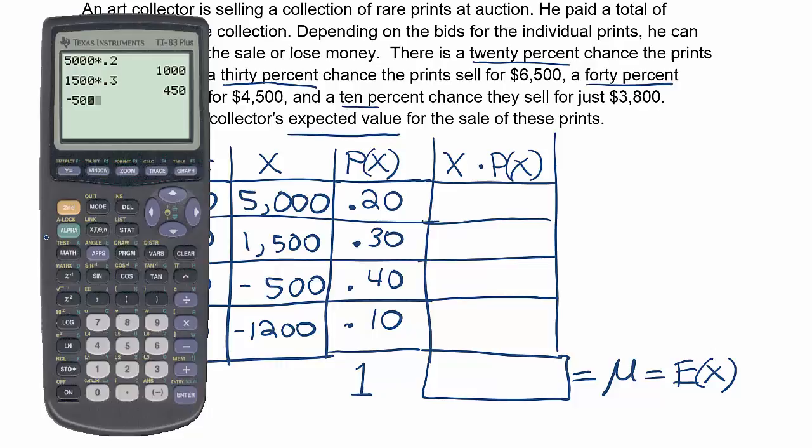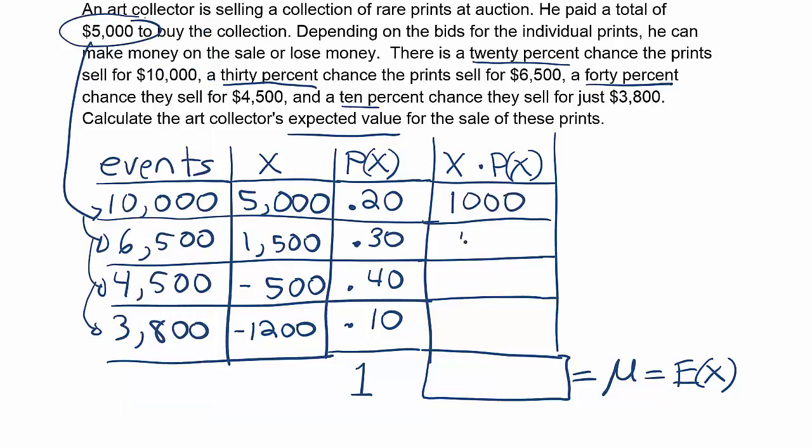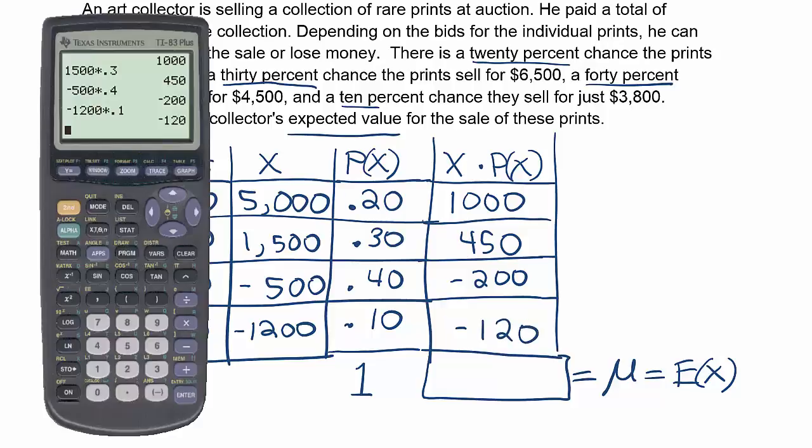Then we'll have minus 500 times 0.4. And then you'll have your negative 200. And then finally, the last one is negative 120, or in other words, negative 1,200 times 0.1. Okay. So there are your four products, right? So you'll have 1,000, 450, minus 200, and minus 120. Okay. And now from there, we can just sum these or perform the subtraction if you think about it that way. 1,000 plus 450 is 1,450. And you'll be subtracting from 1450 minus 320. That's the total of the negative values. And when you're done, you get 1,130.